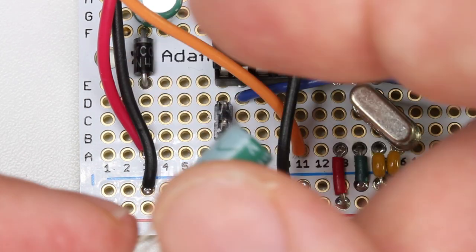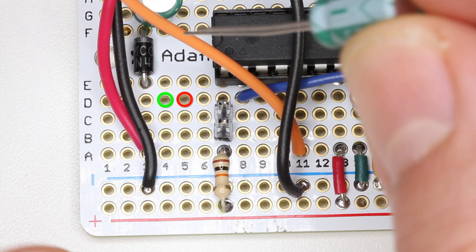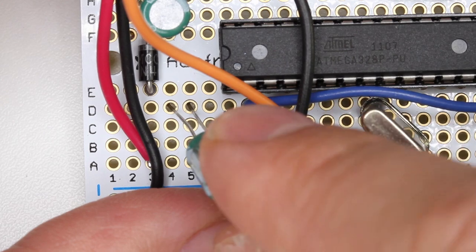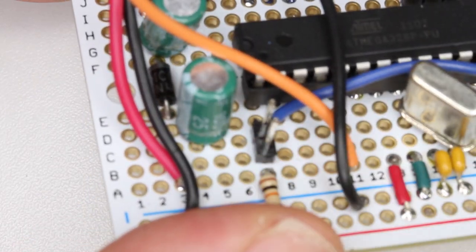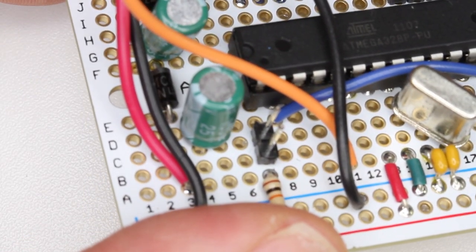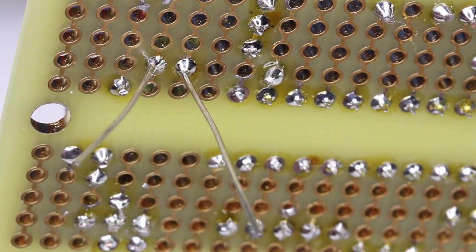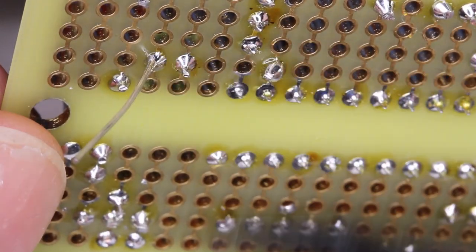We're going to install the capacitor in these two holes. The negative side of the capacitor will be on the left. Now flip the board over and solder the part in place. Next take some side cutters and cut off the excess leads.